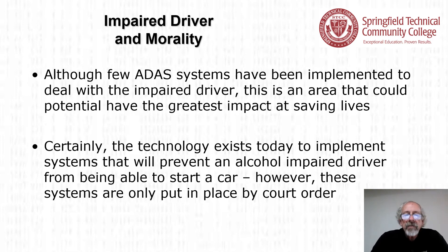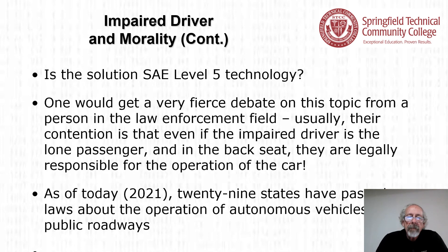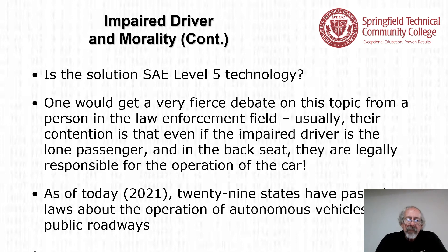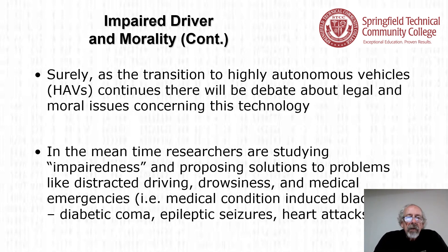Technology exists today to prevent an alcohol-impaired driver from starting a car, but these systems are only put in place by court order. As of 2021, 29 states have passed laws about the operation of autonomous vehicles on public roadways, and about nine more have government regulations in place. Surely, as the transition to highly autonomous vehicles or HAVs continues, there will be debate about legal and moral issues concerning this technology.